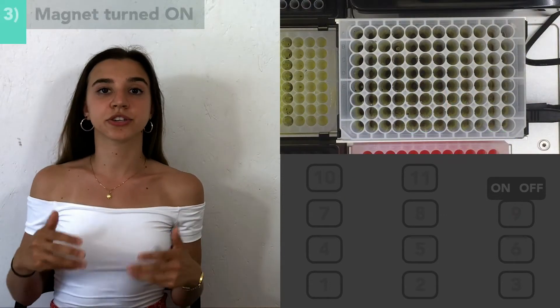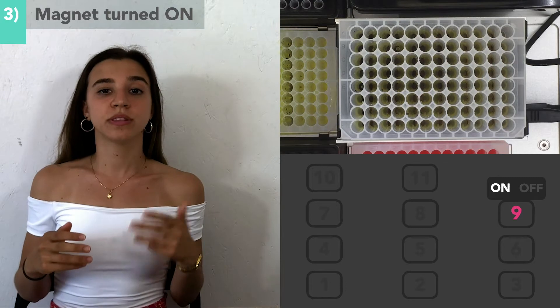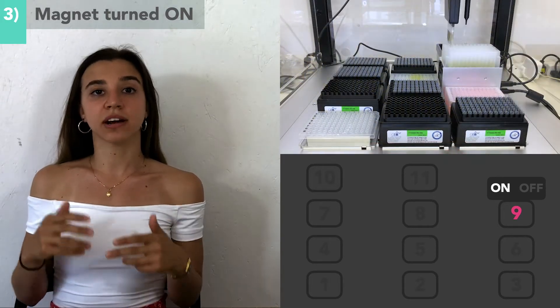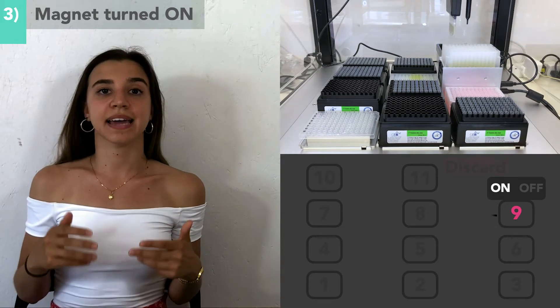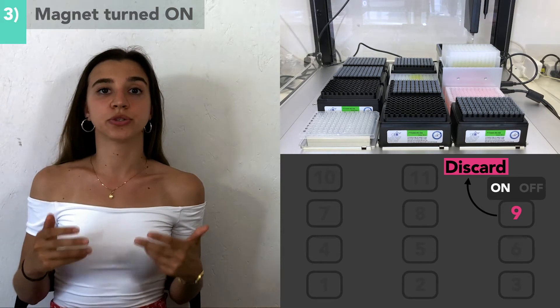At this point, the magnet is turned on. The magnetic beads will subsequently be pulled to the side of the well where the magnet is. While the magnet is on and the beads are held in place, the supernatant can be removed and discarded as all the RNA will be bound to our beads.